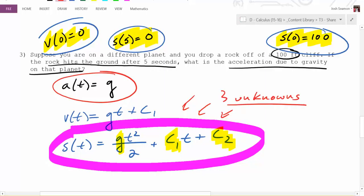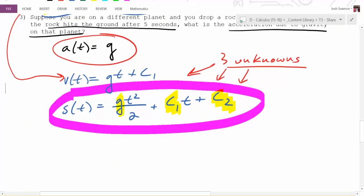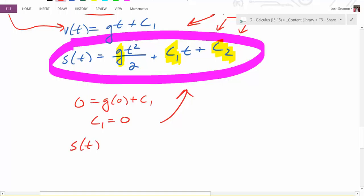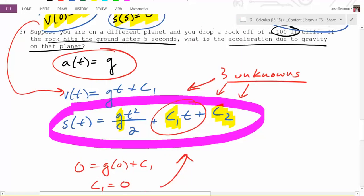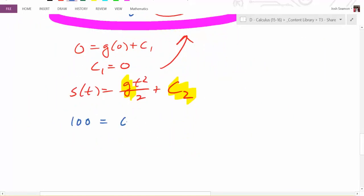So if you have three unknowns, how many pieces of information do you need? You need three pieces of information. So when you plug this in, the first thing you could do is use V of 0. So if you have V of 0 is 0, you know that 0 is equal to G times 0 plus C1. So what does that mean C1 is? 0. Plug it in up there and you get S of T is equal to GT squared over 2 plus C2. So now you have two variables and two pieces of information. You know that S of 0 is 100. So 100 equals 0 plus C2. So what does C2 equal? 100.